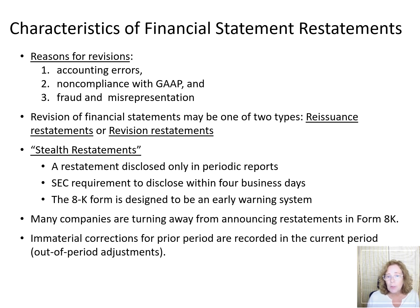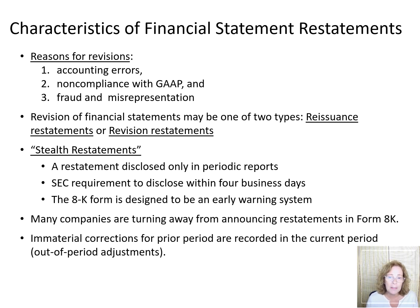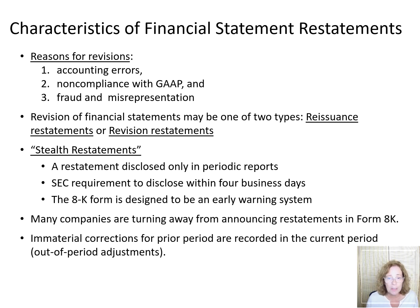The SEC requires companies to disclose within four business days that past financial statements should no longer be relied upon. The 8K form is designed to be an early warning system so that the public knows immediately about financial statement restatements and does not have to wait until the statements are filed with the SEC. However, a recent study found that many companies are turning away from announcing restatements in Form 8K and are instead reporting the restatements in their regular financial reports for the current period as a revision to the prior periods. The problem is that the public is not formally notified and they are not aware that a restatement has occurred.